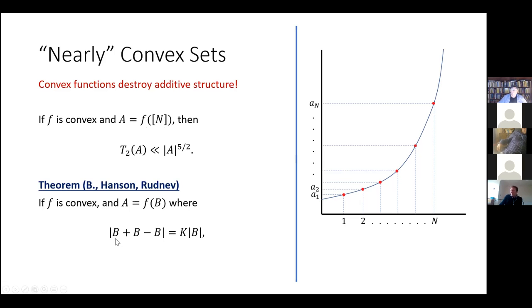So we're going to set AF to be a convex function, and now A is going to be F of B, where we're measuring our additive structure by saying that B plus B minus B is equal to K times the size of B. Now this K we're kind of canonically thinking as being small to say that this has got additive structure, but it doesn't have to be. Okay, so what does this look like in the graph? Well, suddenly we're not taking the image of the first N integers anymore. We're taking our set of these BIs, can be some other set, provided that it's got some additive structure, it's got this small sum set property. And our set A is going to be the image of this under our convex function.